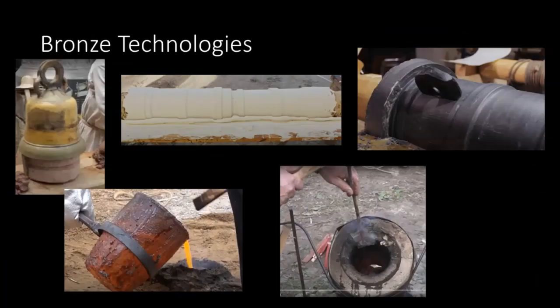We also took a diversion into bronze casting technologies — not smelting, which we'll look at later. We talked about bells and the process for making them, and then the process for making cannons. They're actually pretty similar; it seems clear that you'd need to be good at bell casting before getting good at cannon casting. Reviewing those processes and rewatching those videos might be a good idea to prepare for the assessment.